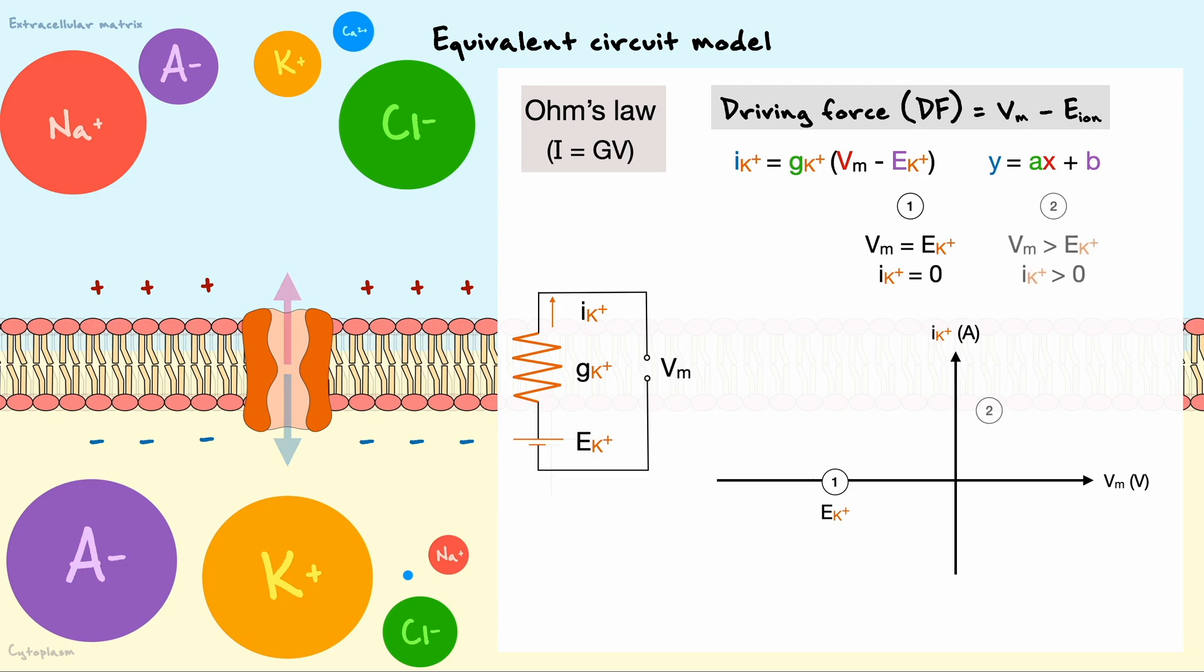Now, let's imagine that the membrane potential is higher, let's say 30 millivolts, then we would expect the current value to be positive. Recall that a positive value of current means that the potassium is leaving out of the channel to the extracellular side.